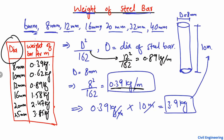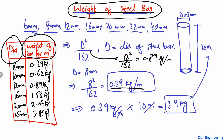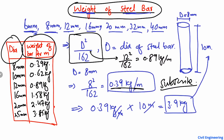For different diameters of the bar, we have a different weight per meter. I hope you guys understand how to find out the weight of the steel bar per meter using this simple formula. You then just multiply by the length of the bar to get the total weight. Don't forget to subscribe to our channel — thank you for watching.